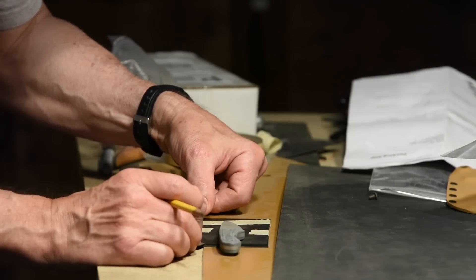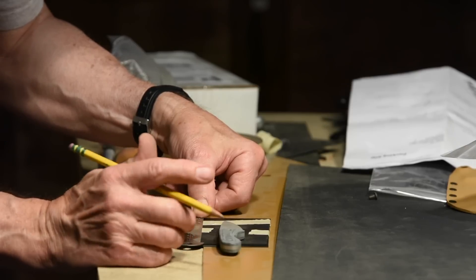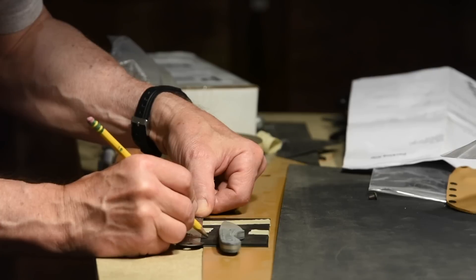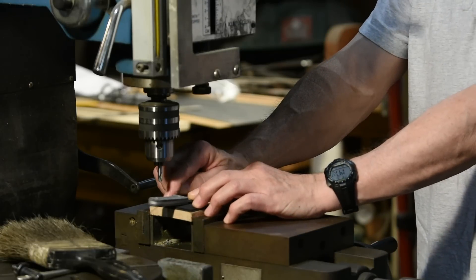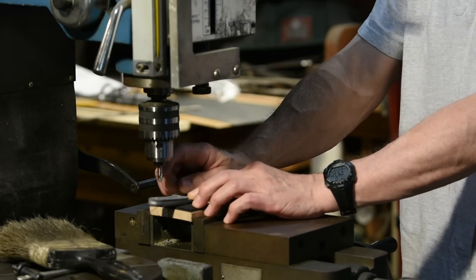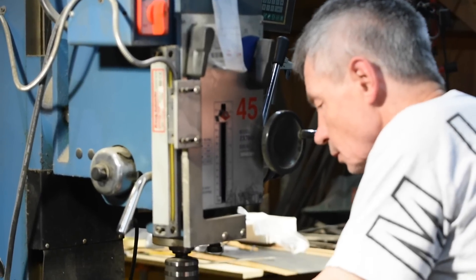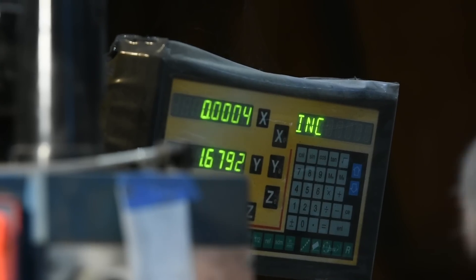The advantage of doing the rivets ahead of time is that you can lay them out with a lot of precision. You might do this using a jig, a press, a drill, or a drill with a digital readout as he's doing here.